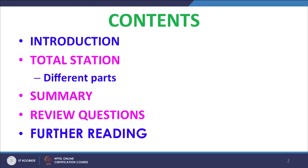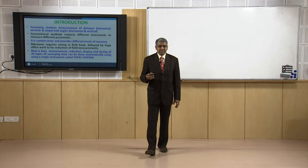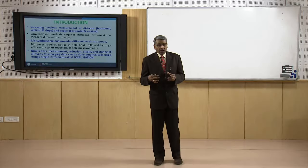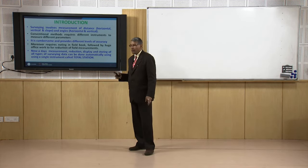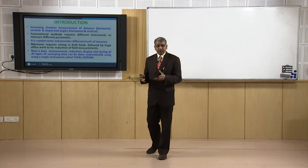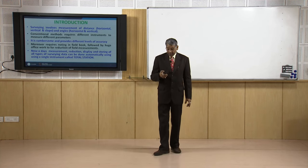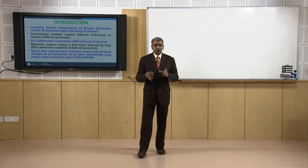Surveying involves measurement of distance and angles, and conventional methods require different types of instruments which are often cumbersome and provide different levels of accuracy. In conventional methods we need to have a field book followed by office work. All these tasks can be done in a single go automatically by using an instrument called total station, and we get all the surveying data in digital format.